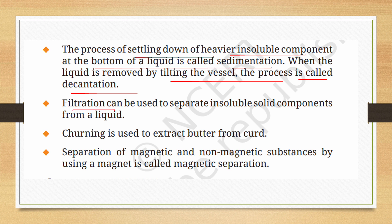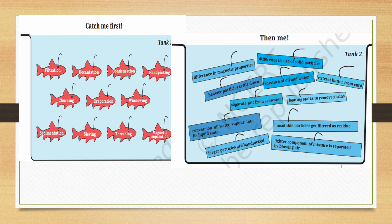Filtration can be used to separate insoluble solid components from a liquid. Churning is used to extract butter from curd. Separation of magnetic and non-magnetic substances by using a magnet is called magnetic separation.